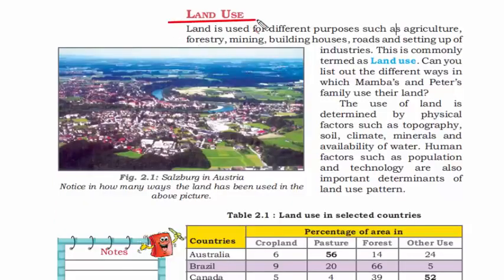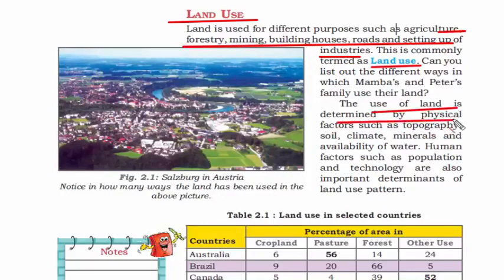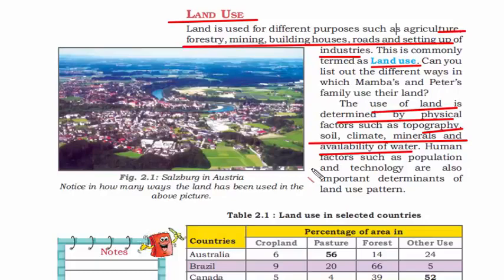We use land for agriculture, forest, mining, building houses, roads, and setting up various industries. The use of land is determined by physical factors such as topography, soil, climate, minerals, and availability of water. Even to run a business in a particular place, these factors matter — without water you cannot run a factory, and if the climate is unsuitable, you cannot grow a particular crop. Soil is also crucial if you are in the agriculture business.